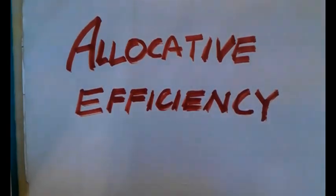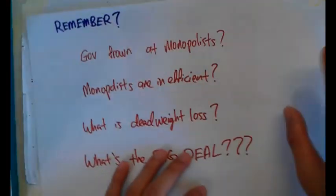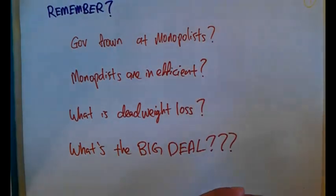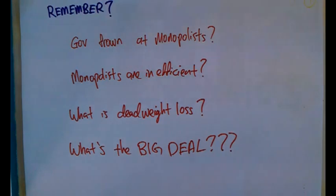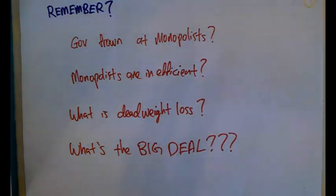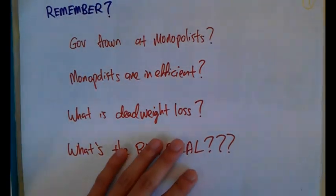For allocative efficiency, think back to when we talked about the government frowning at monopolists. We said that monopolists are inefficient and there is this thing called deadweight loss, but we never really explained why it's called deadweight loss or what the big deal is. Today we are going to cover allocative inefficiency and explain the significance of deadweight loss.